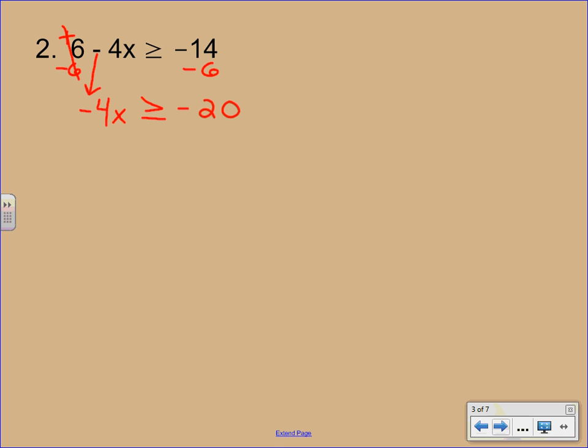Next we're going to divide by a negative 4. So remember your special rule here. We will have to flip the symbol. So it'll end up being x is less than or equal to 5. Graph this. Put a 5 in your middle of your number line. Closed circle. Shade left.